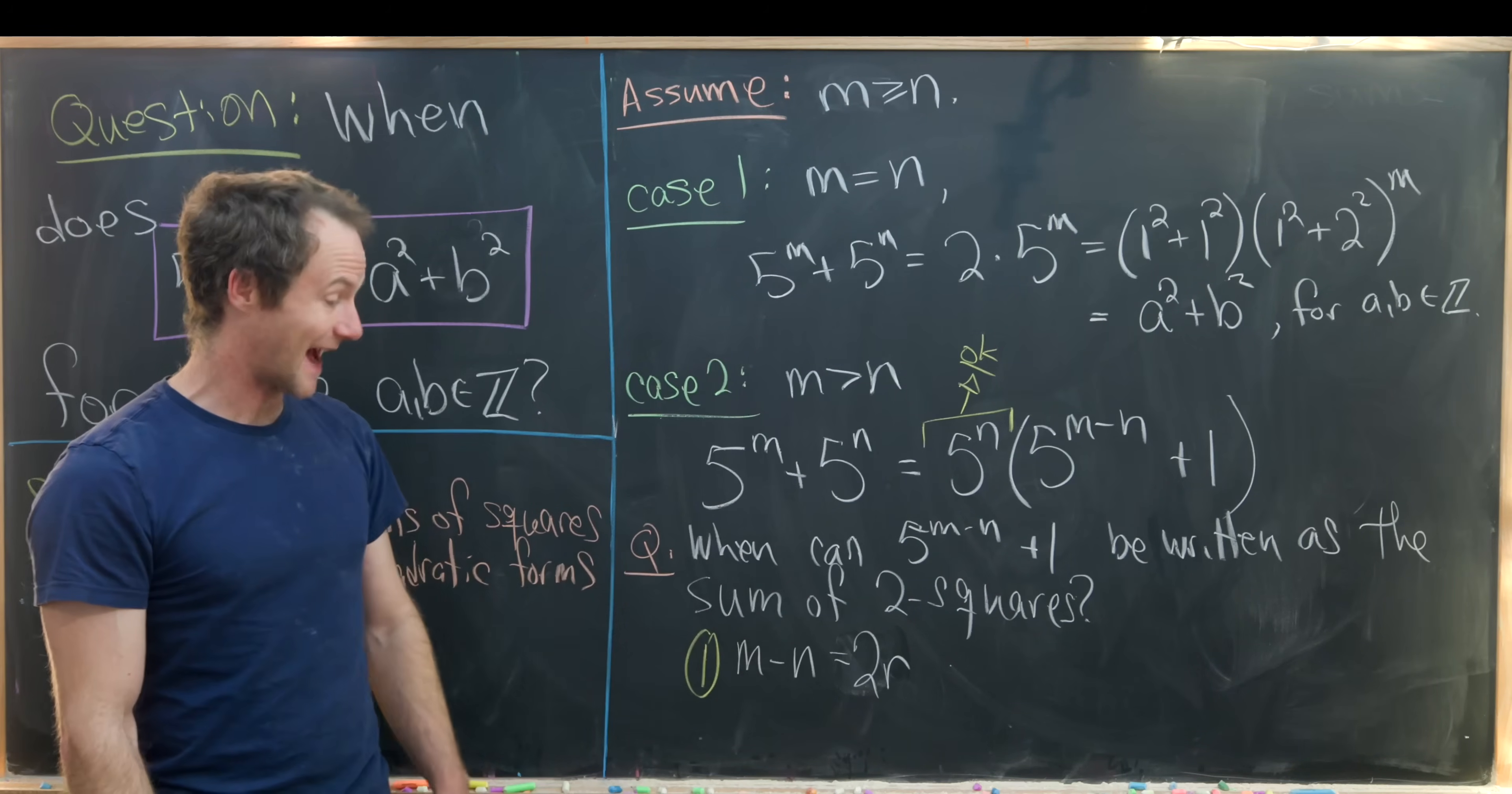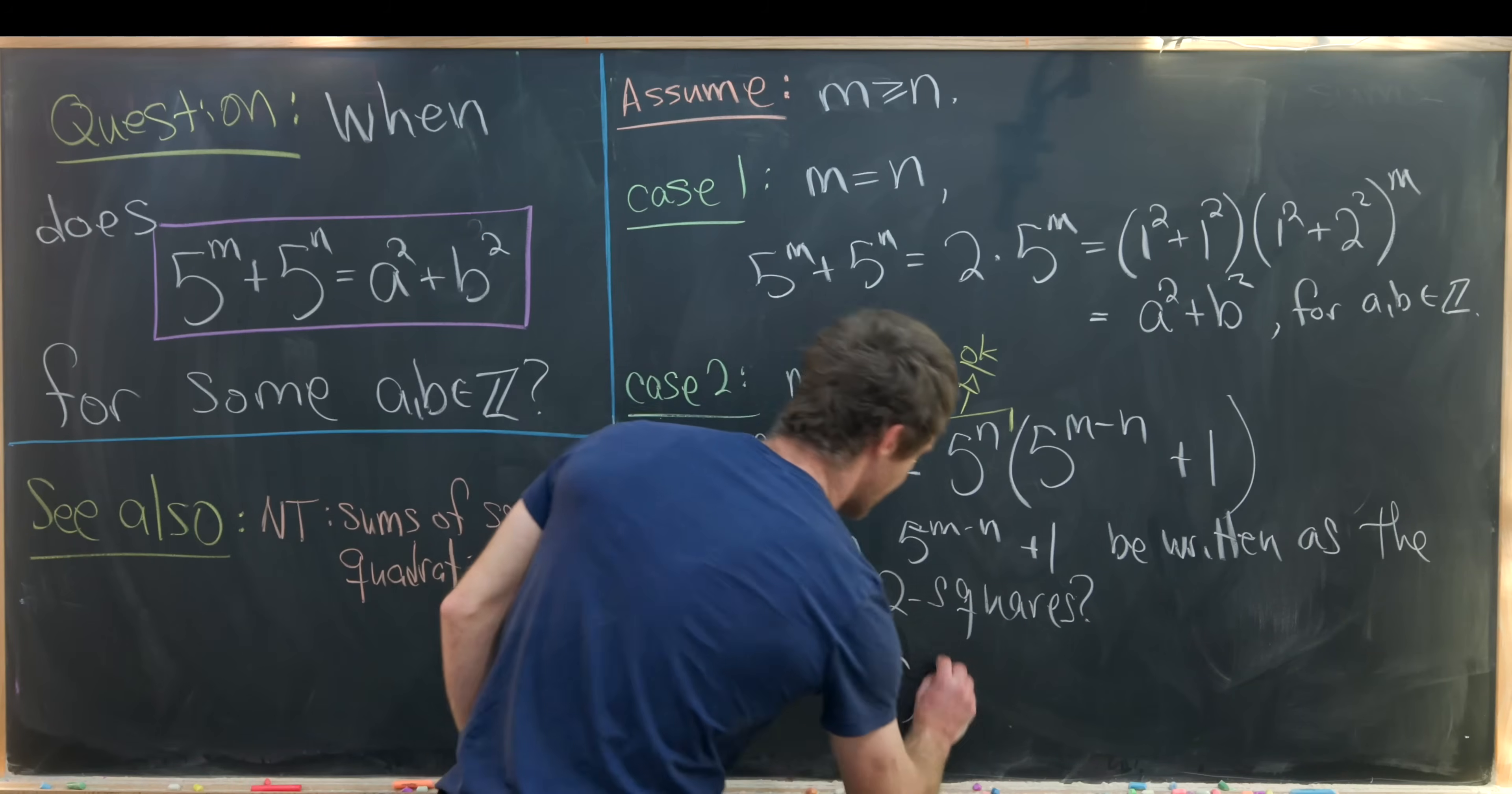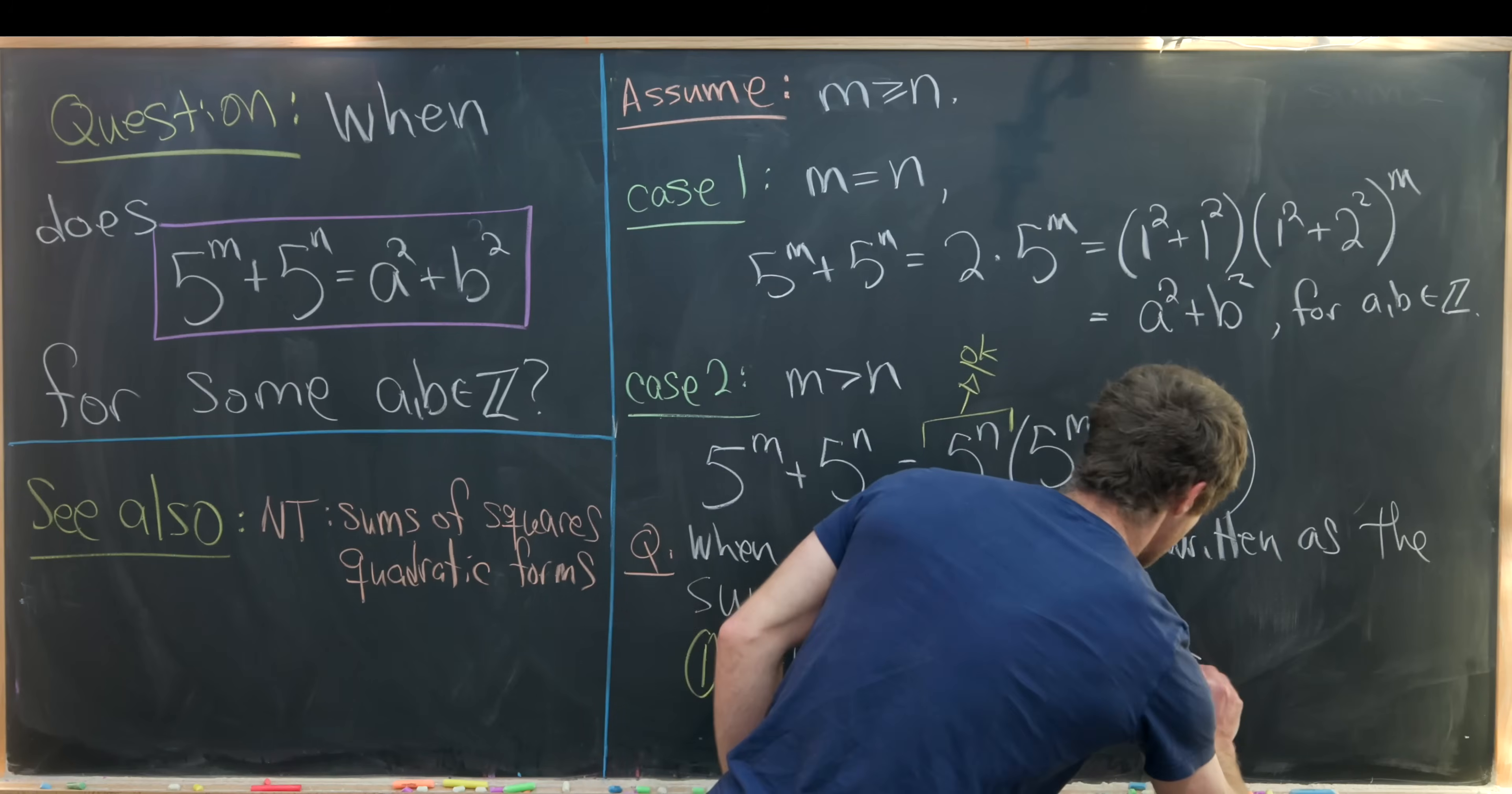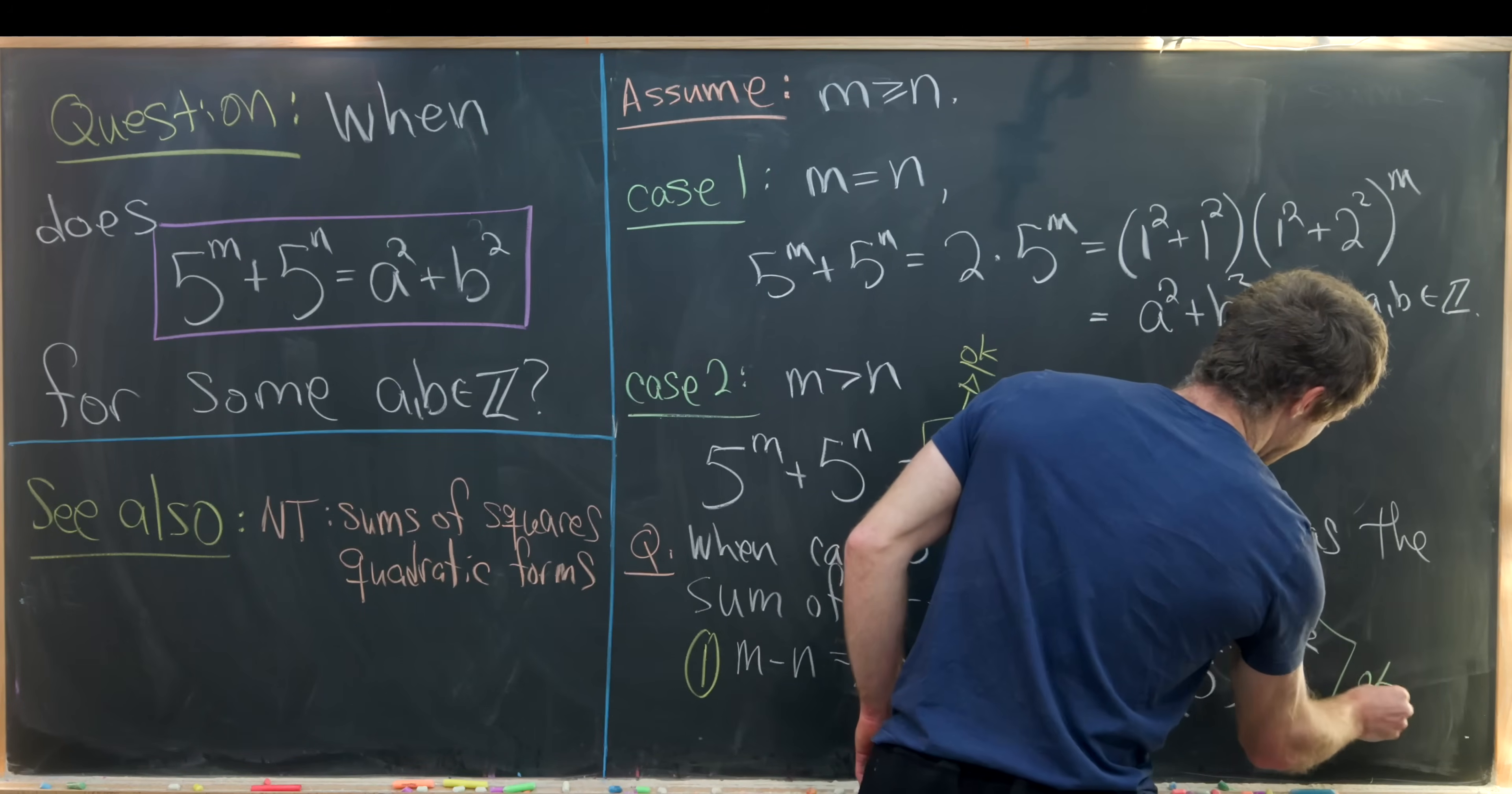And I'm in fact just going to write this as m minus n equals 2 times r for some integer r. Actually it's some natural number r given that m is greater than or equal to n. But notice if we're in this setting then this is already the sum of two squares. So let's notice that we have 5 to the m minus n plus 1 is in fact equal to 5 to the r squared plus 1 squared. So that means in this setting we're also okay.